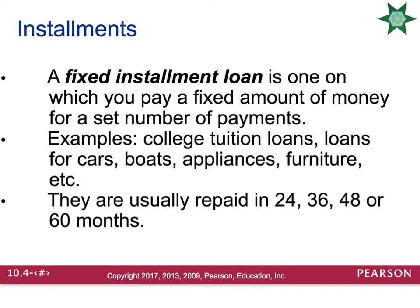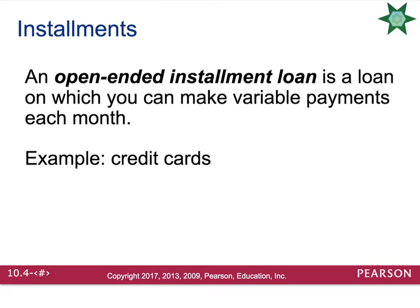A fixed installment loan is one on which you pay a fixed amount of money for a set number of payments. Examples would be your college tuition, loans for cars, boats, appliances, furniture, etc. They're usually repaid in 24, 36, 48, or 60 months. An open-ended installment loan is a loan in which you can make variable payments each month. The best example would be credit cards.